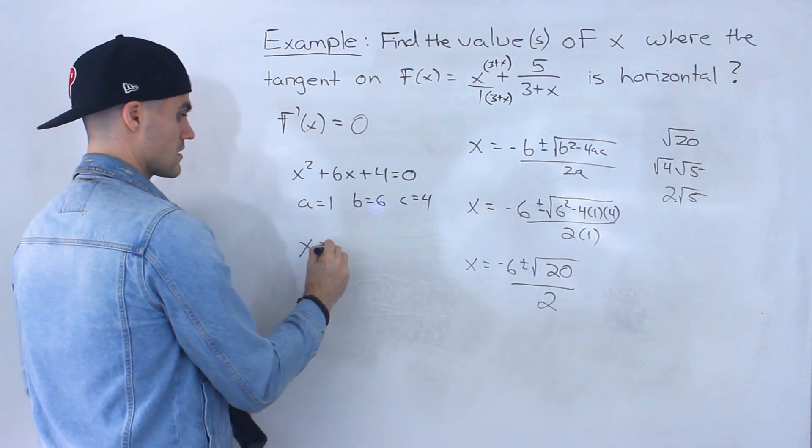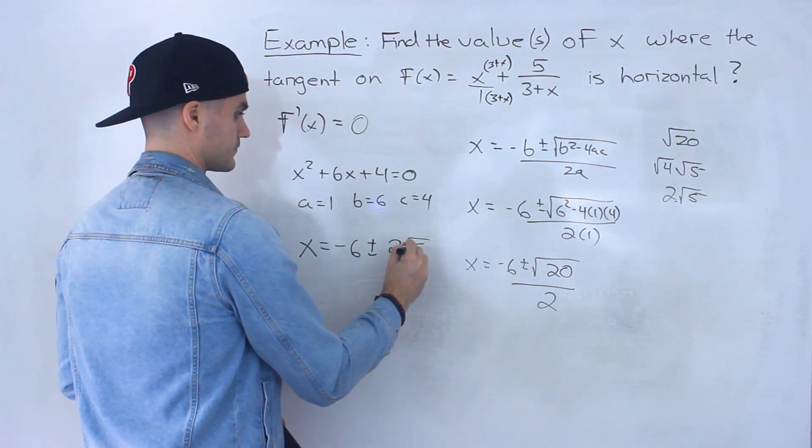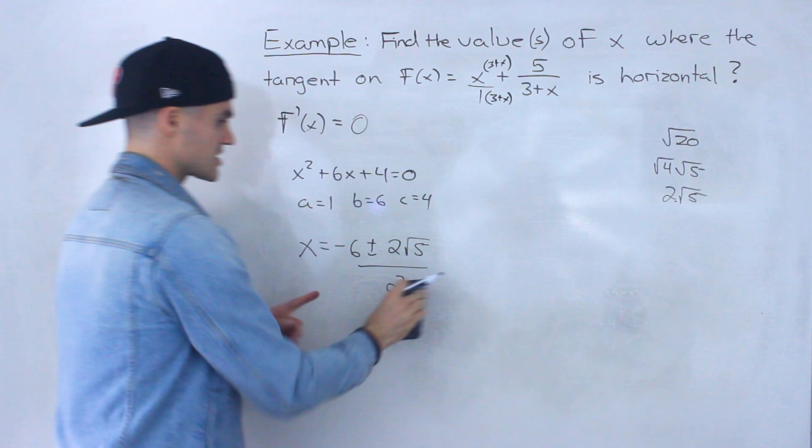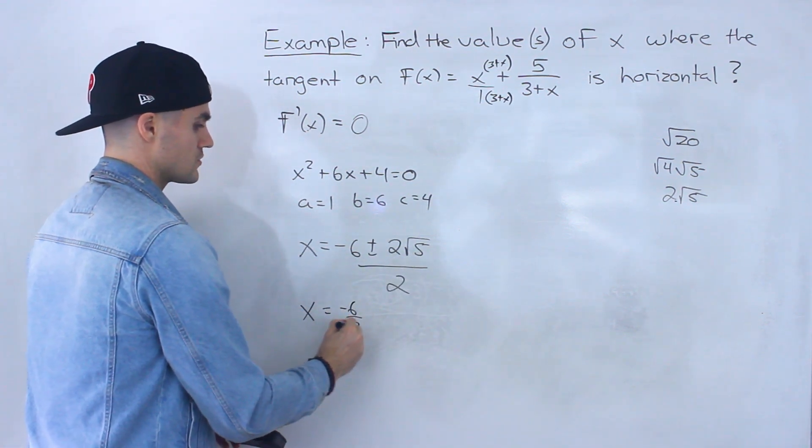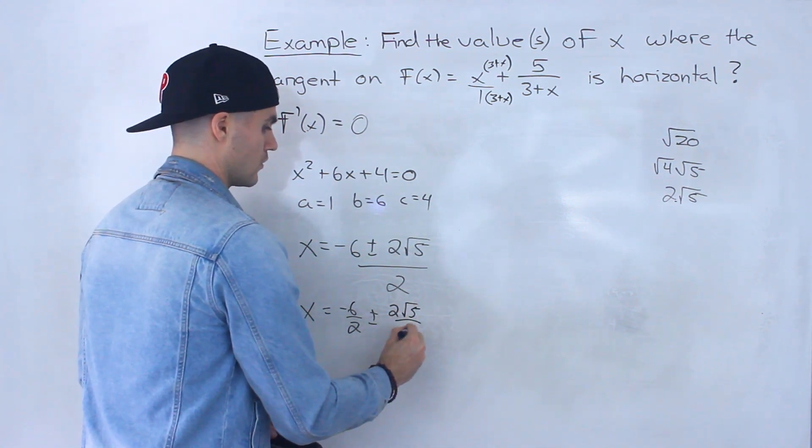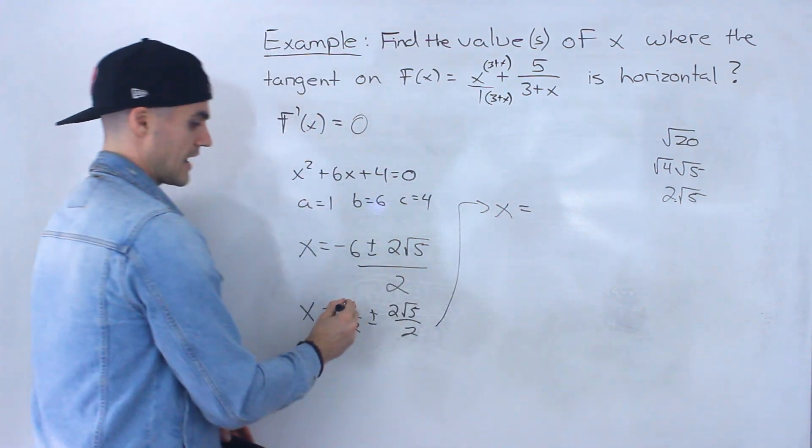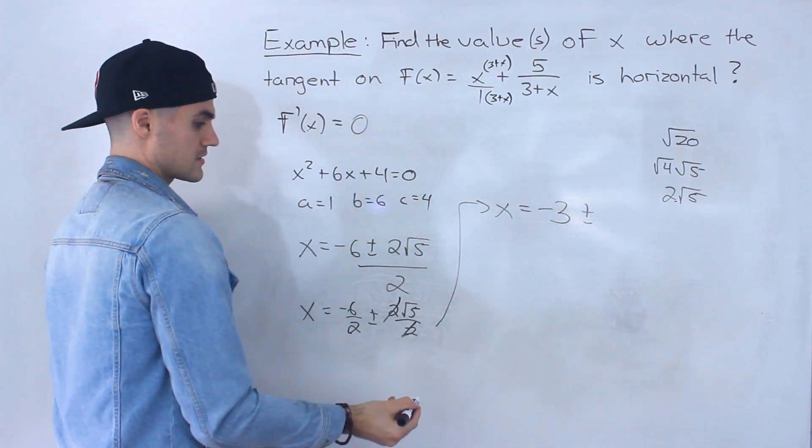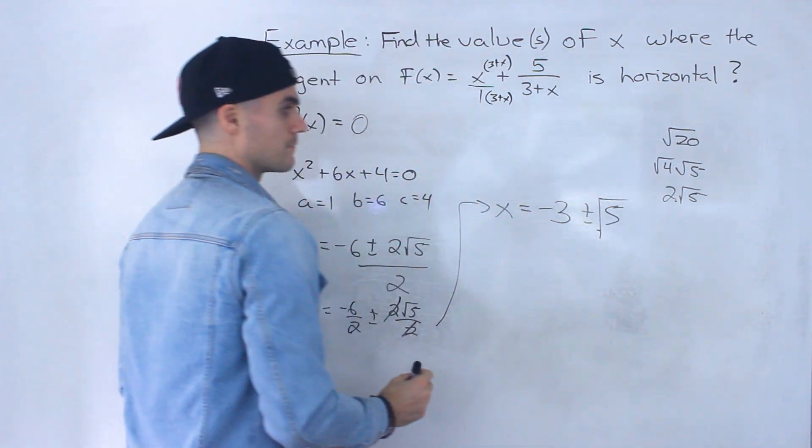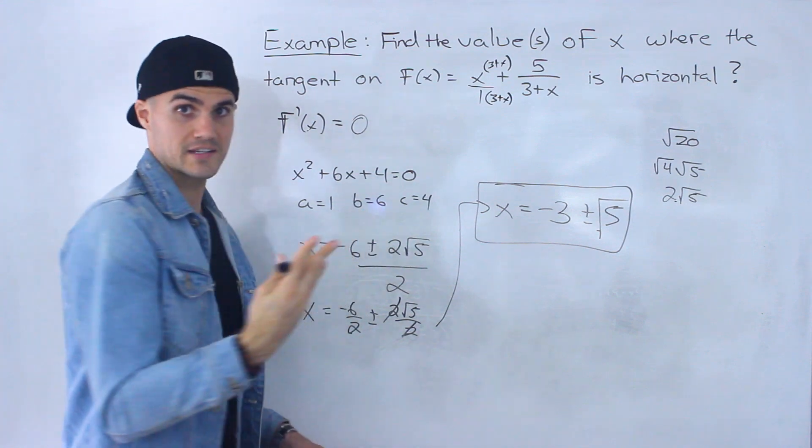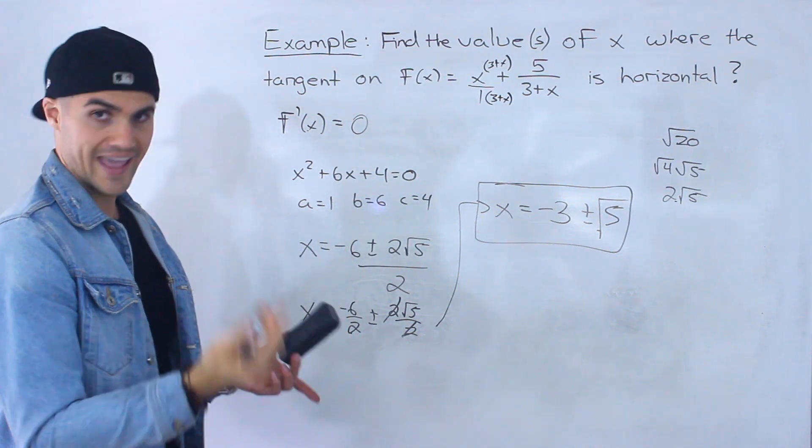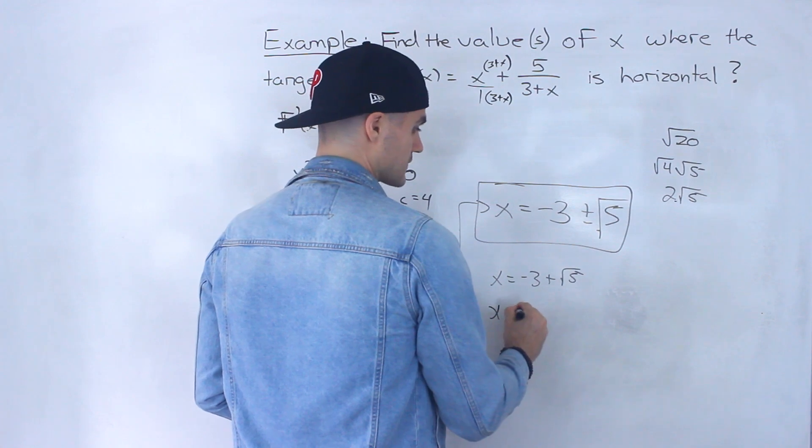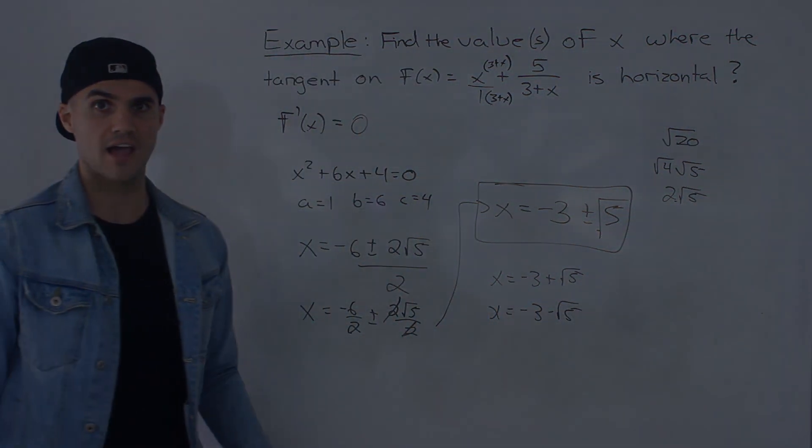And so if I continue this here, what I can do is I can actually split these two terms up. So I would have x equals -6/2 ± 2√5/2. And then notice -6/2 is -3, and then ± notice that the 2's would cancel out, and so we would have √5 there. And so that is the answer. There are two x values where the tangent is going to be horizontal: at an x value of -3 + √5 and then also at an x value -3 - √5 as an exact value.